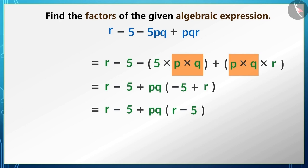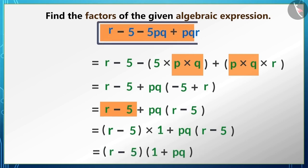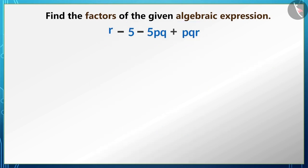We can see here that if we consider r - 5 as a term, we can write it further in this way. Hence the factorization of the given expression will be (r - 5) multiplied by (1 + pq).